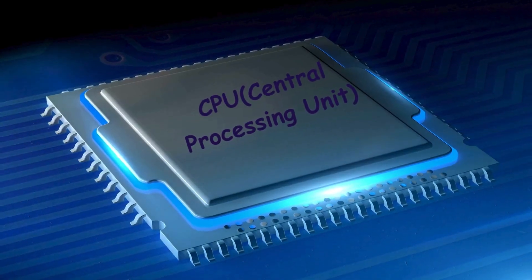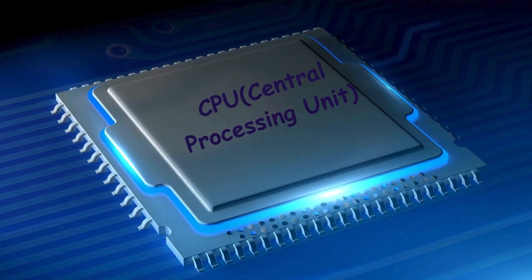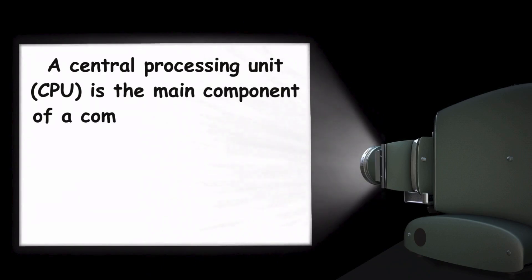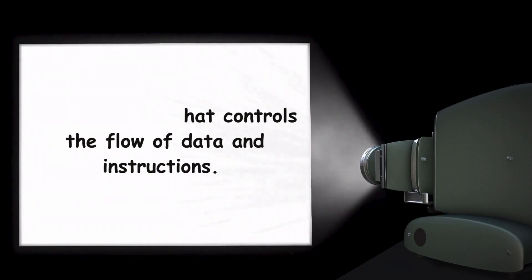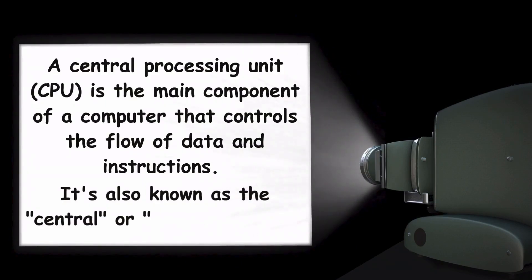Now, it's time to explore the CPU. A central processing unit, CPU, is the main component of a computer that controls the flow of data and instructions. It's also known as the central or main processor.